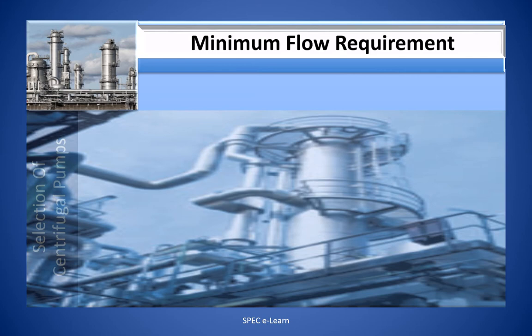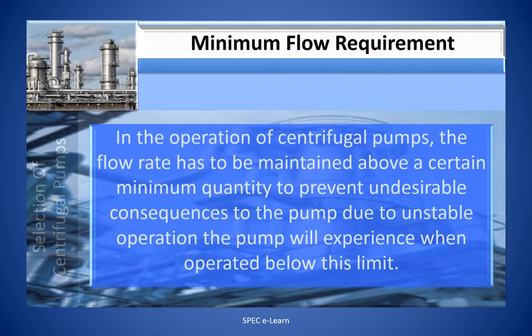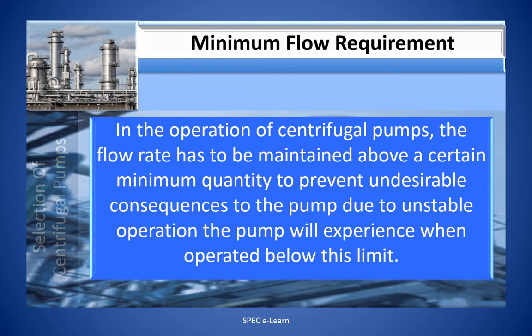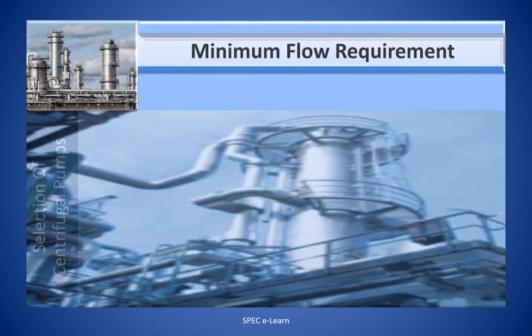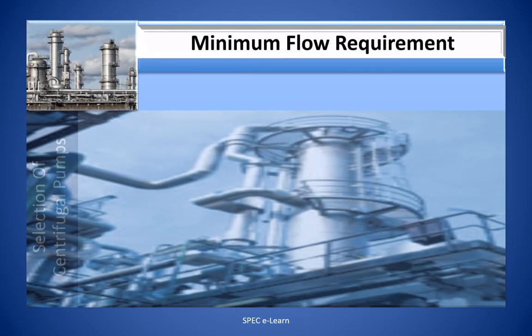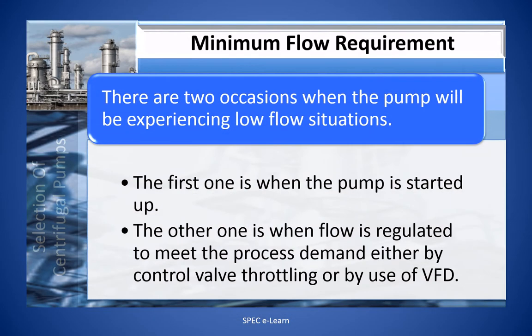When you operate a centrifugal pump, the flow rate must be maintained above a certain minimum quantity to prevent undesirable consequences due to unstable operation below this limit. There are two occasions when the pump will experience low flow situations: when the pump is started up, and when the flow is regulated to meet process demand either by control valve throttling or by use of a VFD (variable frequency drive).